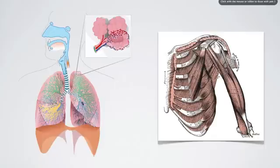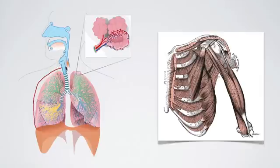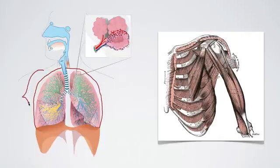Here we have the two lungs and I'm going to draw an additional part because this diagram is simplified. We're going to close this off and give some names. This entire section that we're dealing with is called the thoracic cavity.